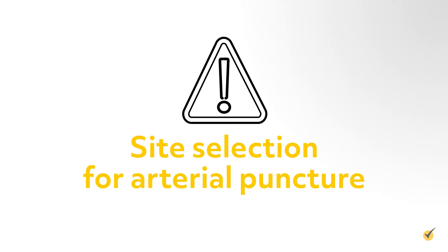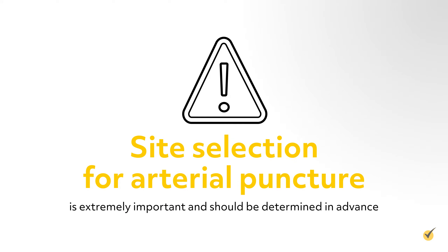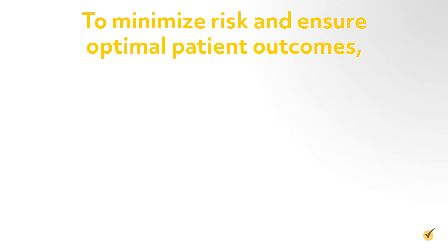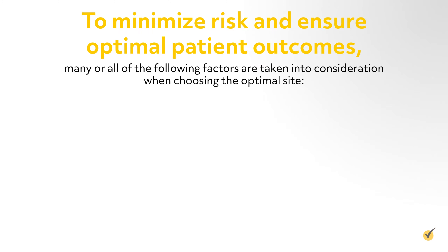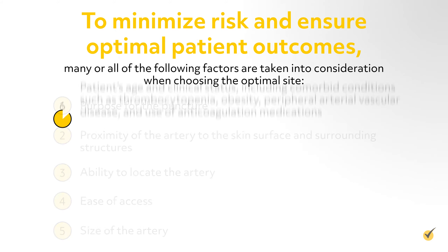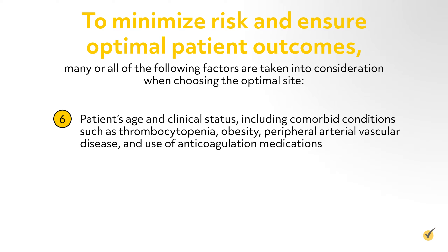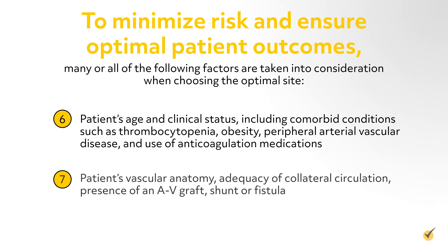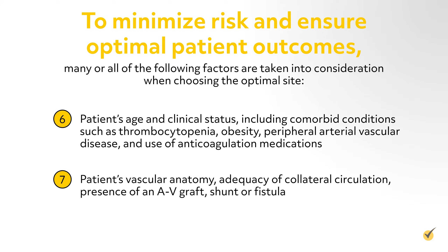Site selection for arterial puncture is extremely important and should be determined in advance. To minimize risk and ensure optimal patient outcomes, many or all of the following factors are taken into consideration: purpose for the puncture, proximity of the artery to the skin surface and surrounding structures, ability to locate the artery, ease of access, size of the artery, patient's age and clinical status including comorbid conditions such as thrombocytopenia, obesity, peripheral arterial vascular disease, use of anticoagulation medications, patient's vascular anatomy, adequacy of collateral circulation, and presence of an AV graft, shunt, or fistula.